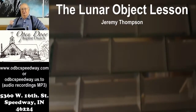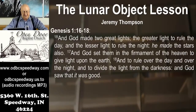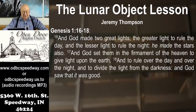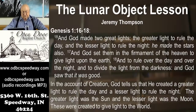An object lesson works like this: I could hold a candle up and say the flame reminds us of this, the wax feeding the flame reminds us of that. So we begin with Genesis 1:16-18 — 'And God made two great lights, the greater light to rule the day and the lesser light to rule the night. And he made the stars also. And God set them in the firmament of the heaven to give light upon the earth, to rule over the day and over the night, and to divide the light from the darkness. And God saw that it was good.' So in this object lesson, we're looking at the sun, the moon, and the world.